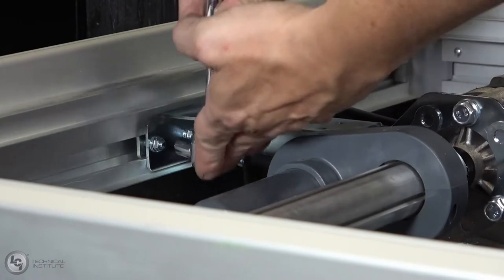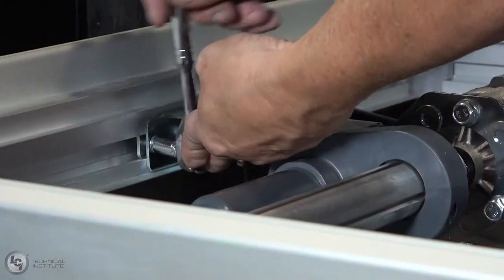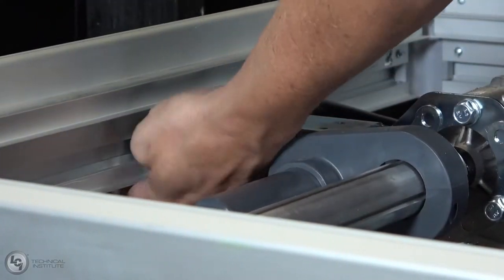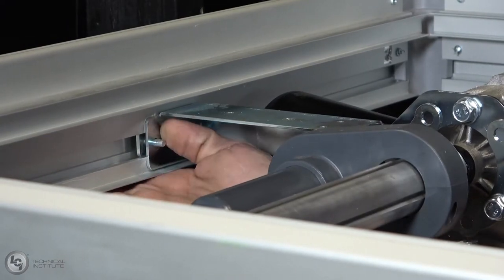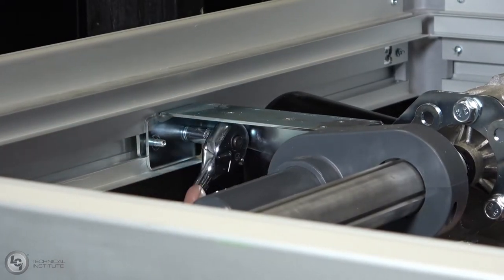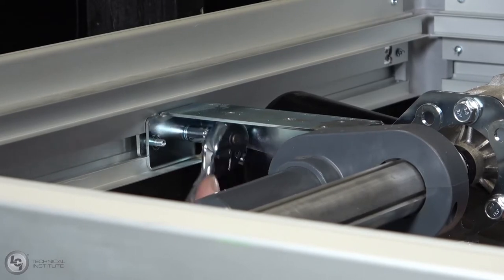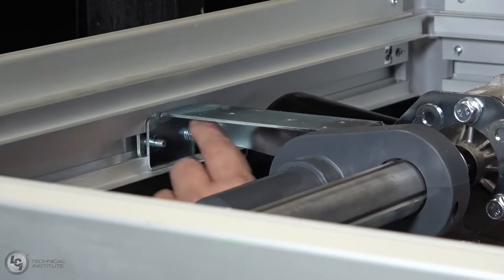To remove the bracket holding the ACS and motor in place, we will need to use a socket and ratchet. This space is very limited even with the ACS removed, so a drill will not likely fit. Once you have removed the nuts, you can slide the bracket forward and off the rear plate.